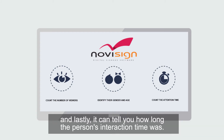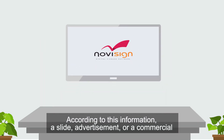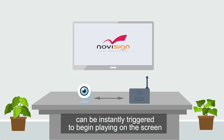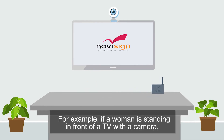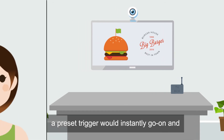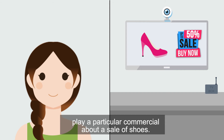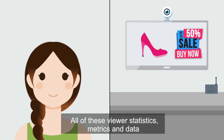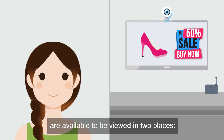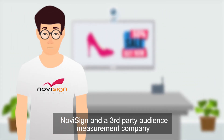It can also tell you how long the person's interaction time was. According to this information, a slide advertisement or commercial can be instantly triggered to begin playing on the screen. For example, if a woman is standing in front of a TV with a camera, a preset trigger would instantly go on and play a particular commercial about a sale of shoes. All of these viewer statistics, metrics, and data are available to be viewed in two places: NovaSign and a third-party audience measurement company.